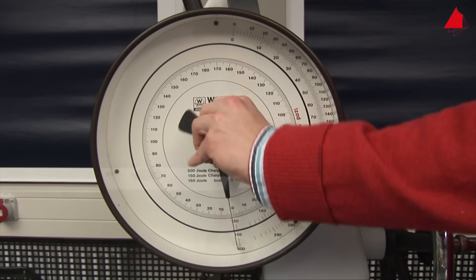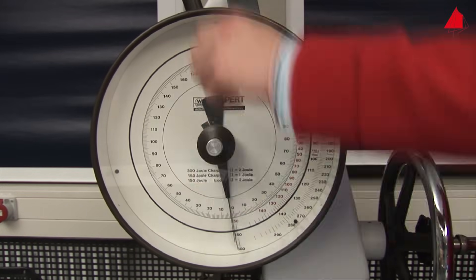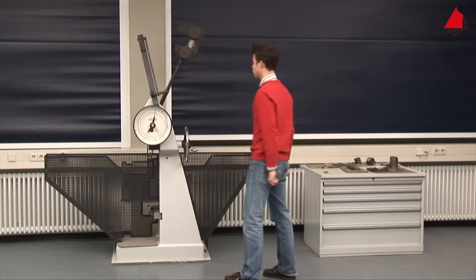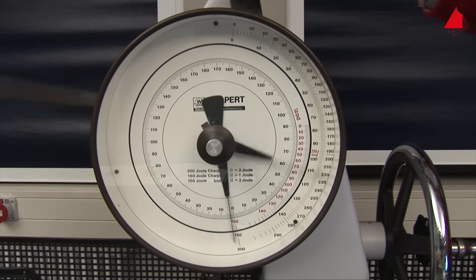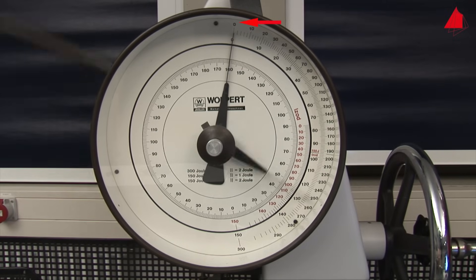In order to do this, he turns the drag indicator downwards and releases the pendulum without a test specimen. The drag indicator stops at position 0. This proves that the pendulum has the correct starting position and that the friction is correctly compensated.